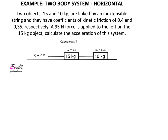There is a set format to follow when answering a two-body system. The first part is always to start by drawing a free body diagram for each object. For the 15 kilogram object, there is a force of gravity acting downward, a normal force acting vertically upward, a tension force acting to the right, and the applied force pulling this object to the left.